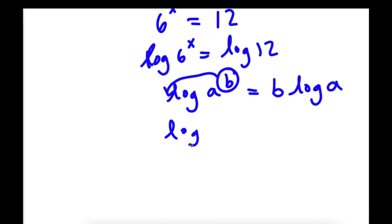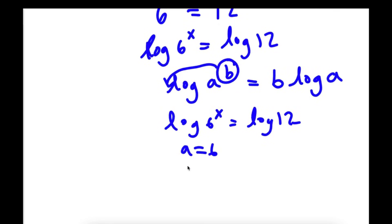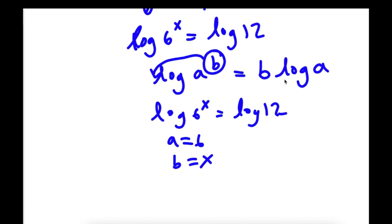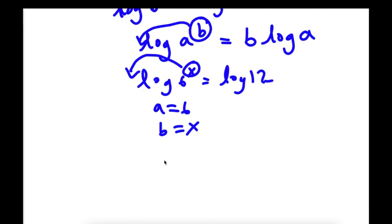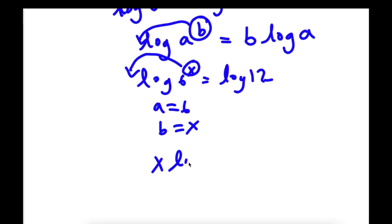So now for log 6 to the power of x is equal to log 12, we can think of a as 6 and b as x. I'm going to move this exponent x to the front of the logarithm. So now this will be equal to x times log 6 is equal to log 12.